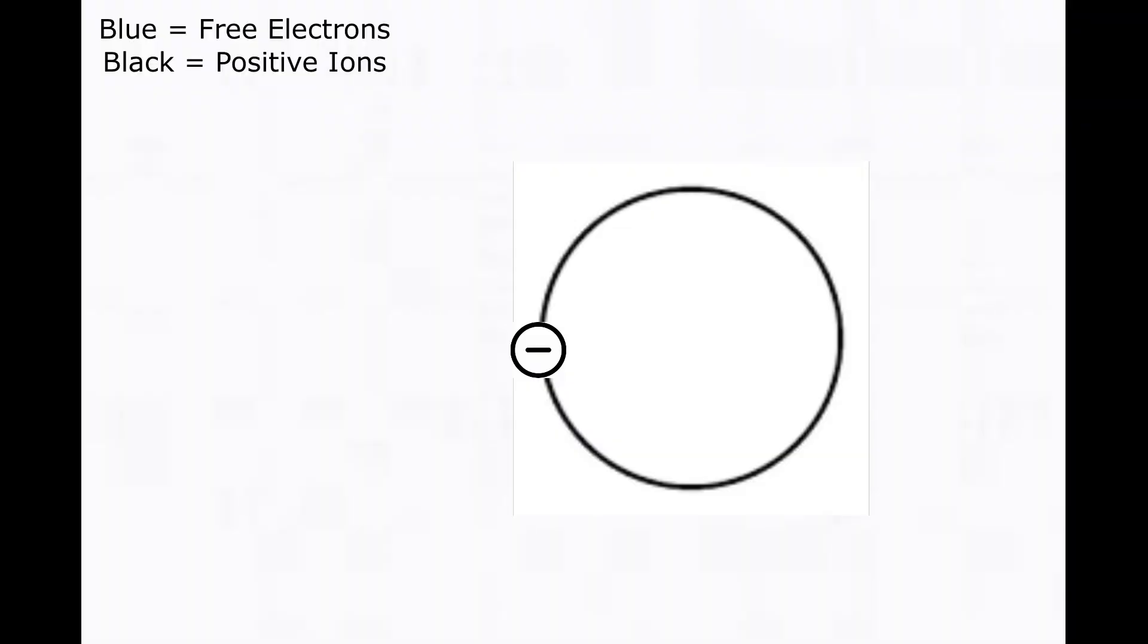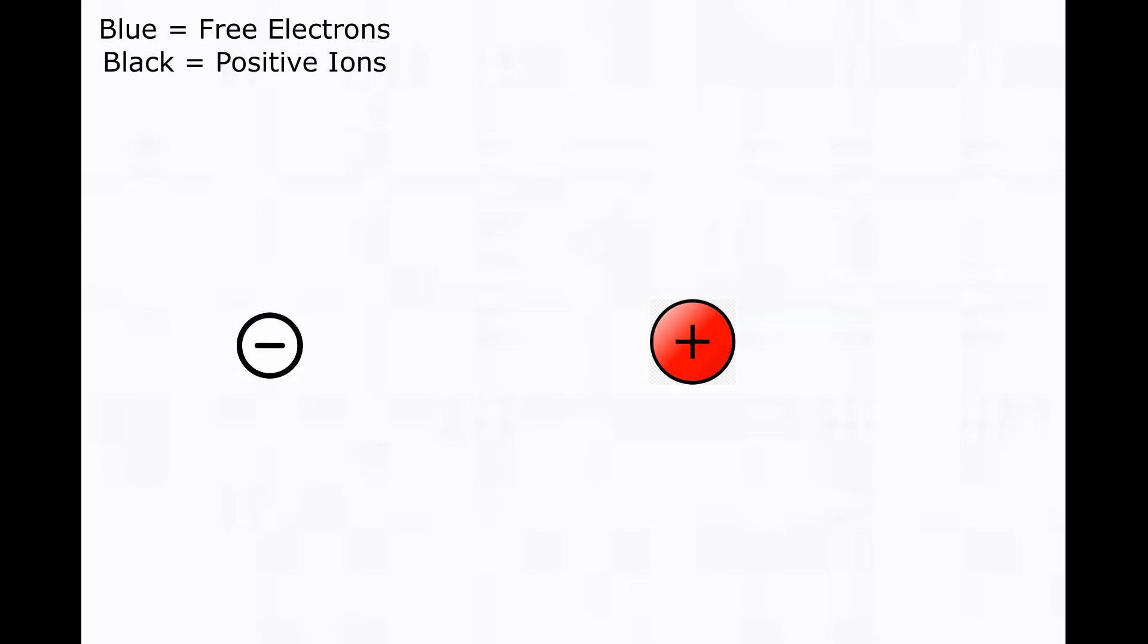So if you have an electron and a positive ion, and add heat, electrons break free from their atoms, creating free electrons and positive ions.